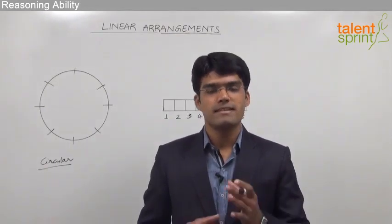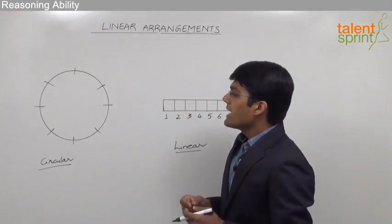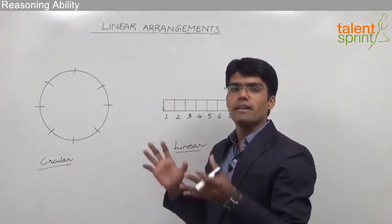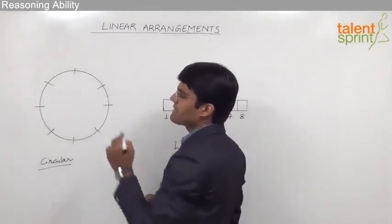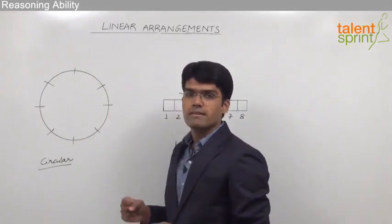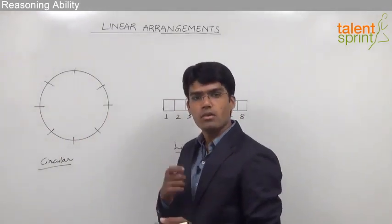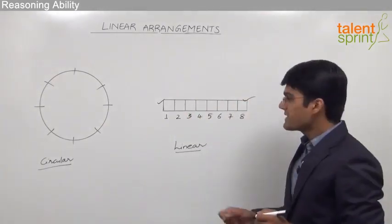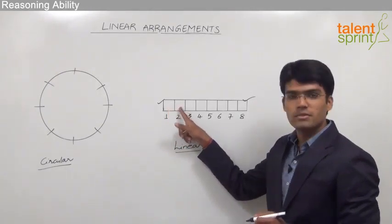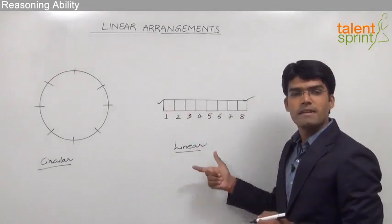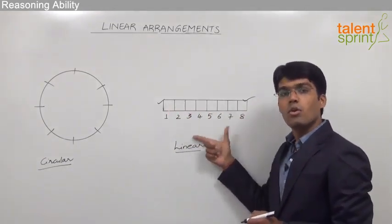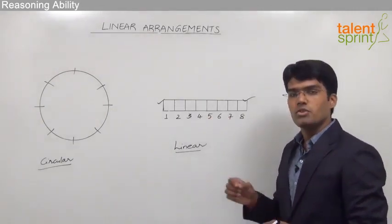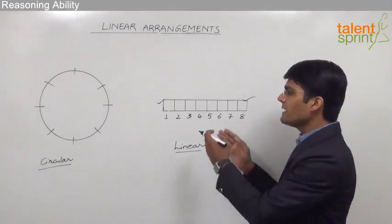Let us now understand the major difference between a circular arrangement and a linear arrangement. In a circular arrangement we can start from any position on the circle, since a circle has no definite starting point or ending point. But in a linear arrangement we have a definite starting point and ending point — position one through eight, for example. So we can place a person on the row only when we know his position from either the left end or the right end.